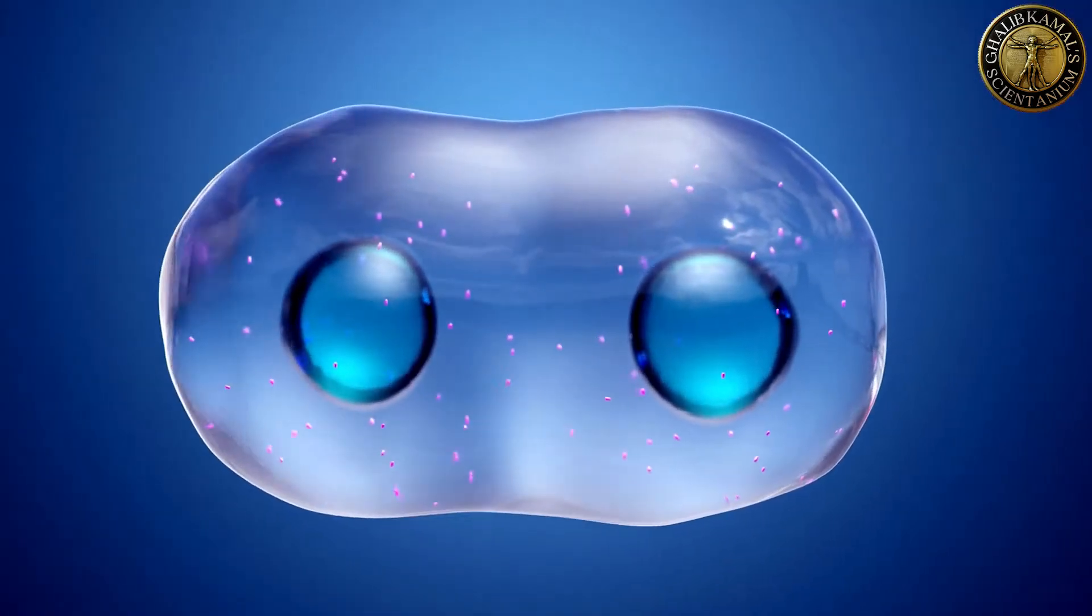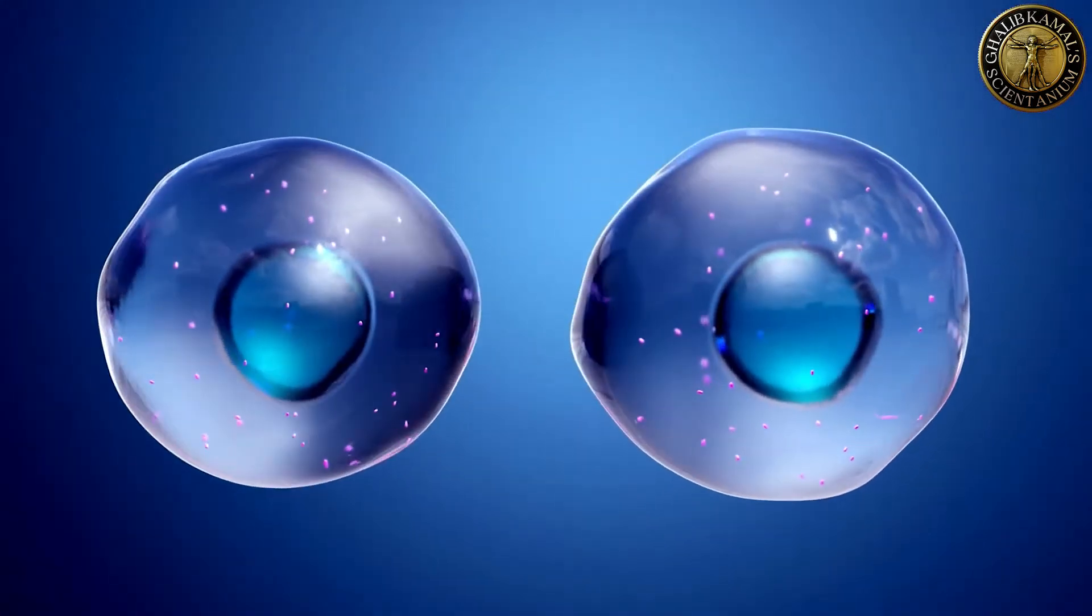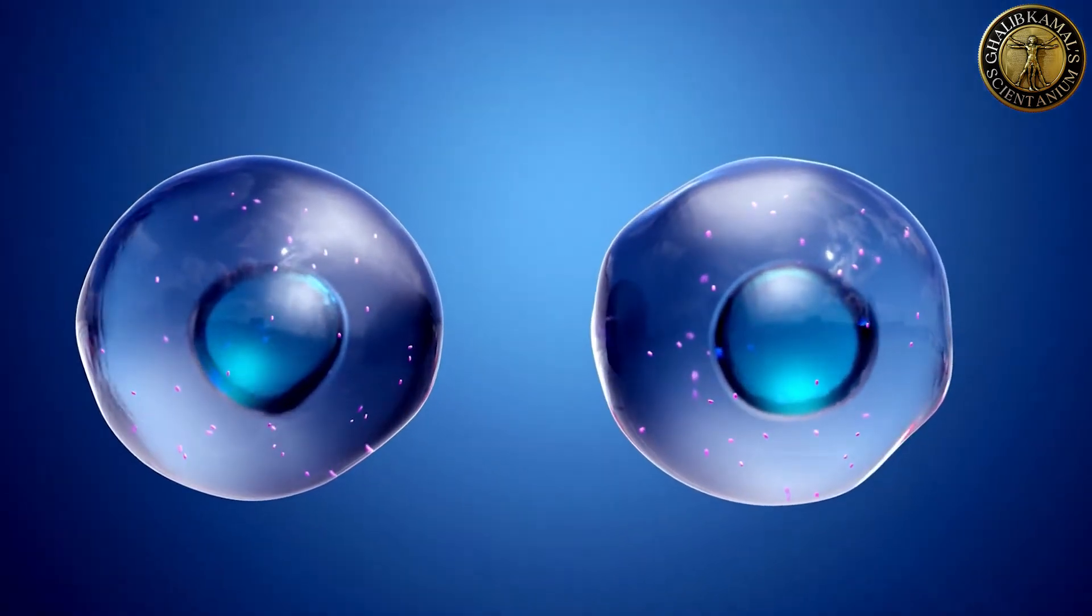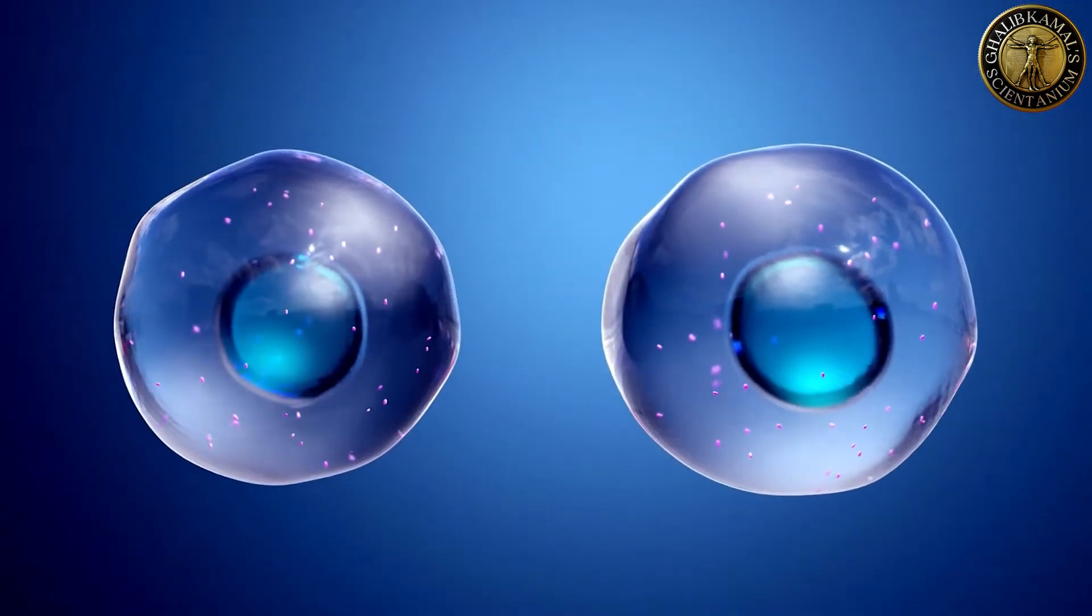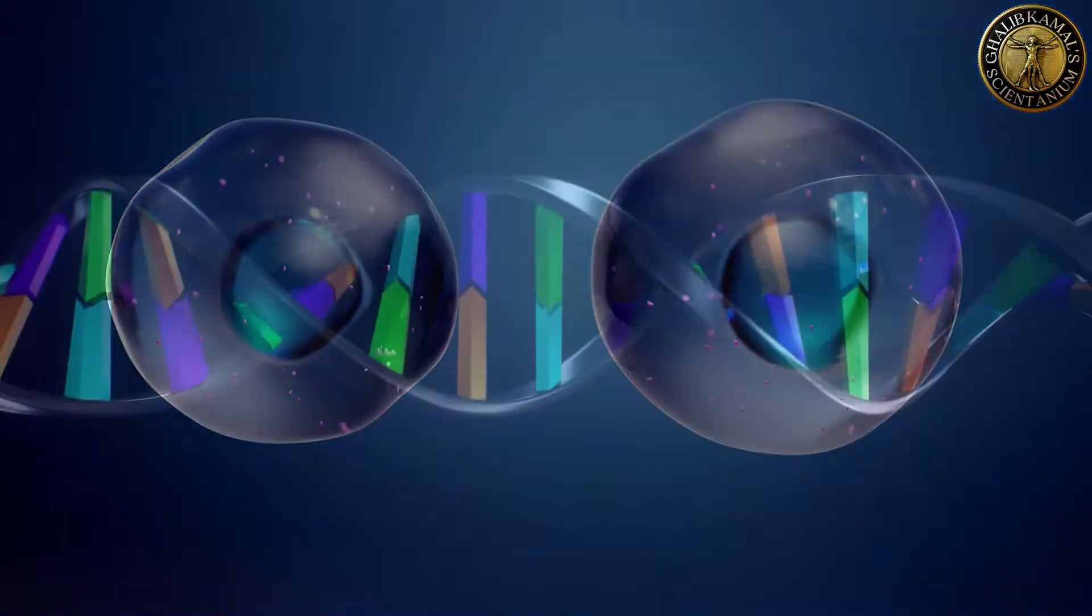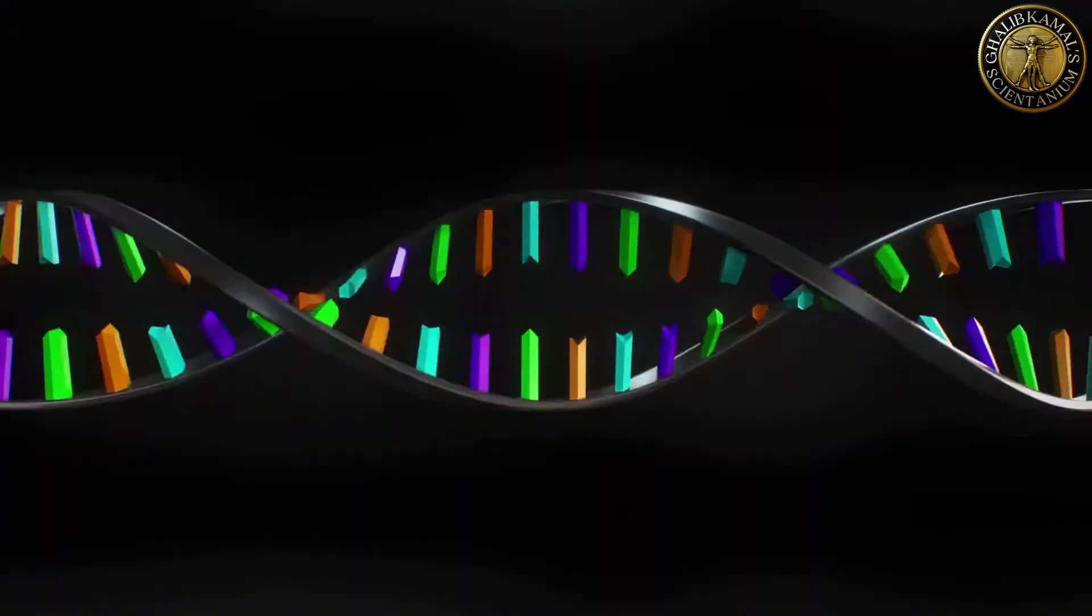Cells reproduce through cell division. During cell division, DNA strands in the cell are also copied. The double helix of DNA breaks in the middle and two strands become separated.